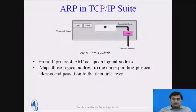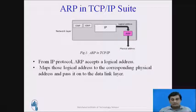In figure 1, you can see the position of ARP in the TCP/IP protocol suite. ARP accepts the logical address from the Internet Protocol and maps that logical address to its corresponding physical address. Once ARP maps those addresses, the physical address is passed on to the data link layer.